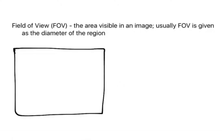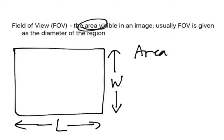So let's say we have a rectangular image and the rectangular image has a length L and a width W. The area visible is equal to the length times the width.